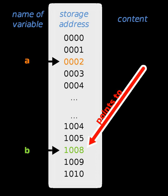In doubly linked lists or tree structures, a back pointer held on an element points back to the item referring to the current element. These are useful for navigation and manipulation, at the expense of greater memory use.